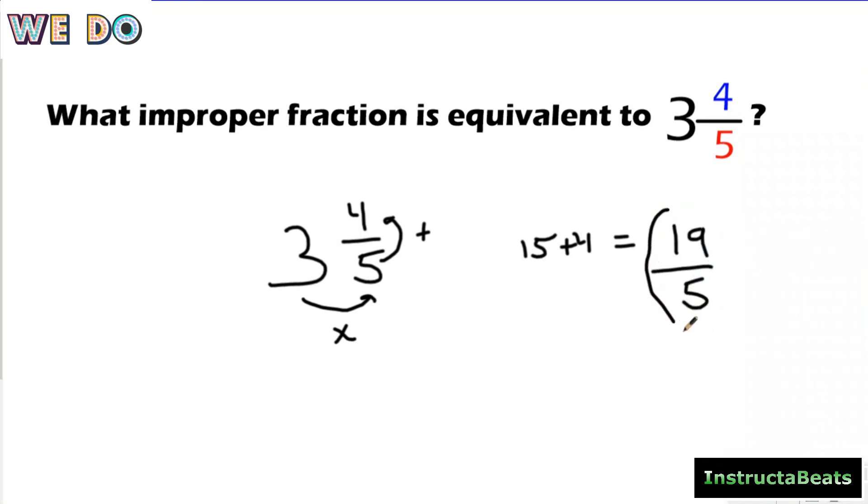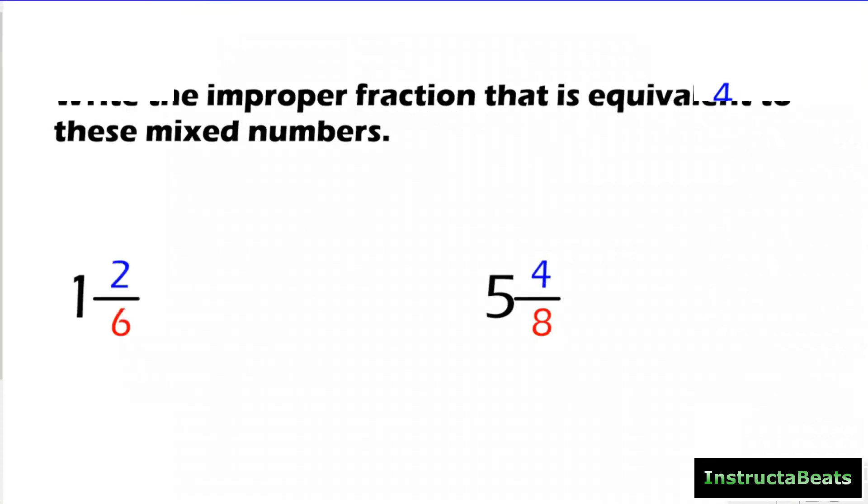Then I would have to add my numerator plus four, which is going to give me 19, and my denominator would stay the same. So 3 and 4/5, if you wrote it as an improper fraction, would be 19/5. And it's that simple, right? It's just doing the shuffle. We do it over and over and over again.